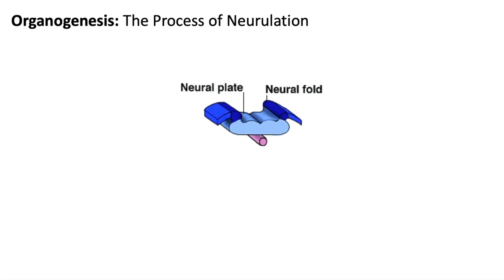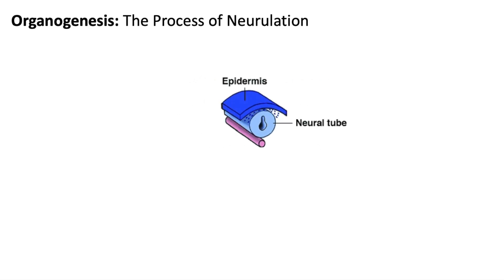After the neural plate forms, cells begin to change shape which curves the structure inward. The neural plate rolls itself into a neural tube that will become the brain and spinal cord. The notochord will degenerate before birth, although parts of it will persist as the inner portions of the intervertebral discs.